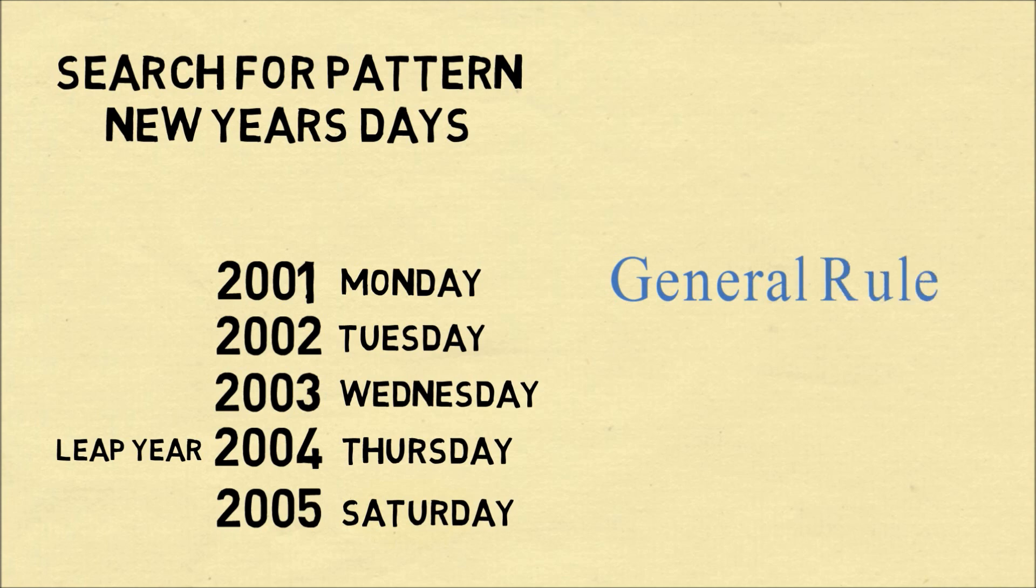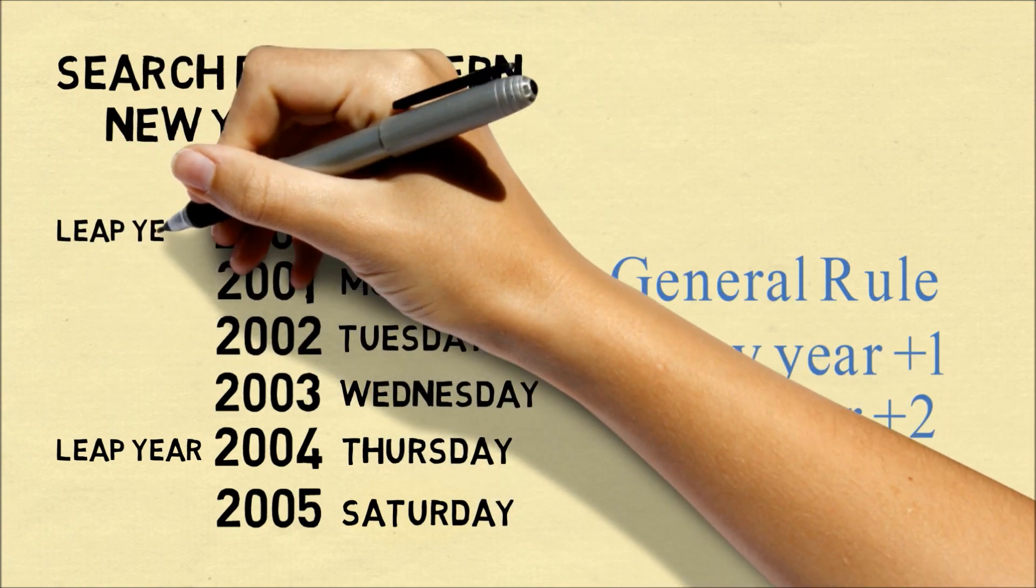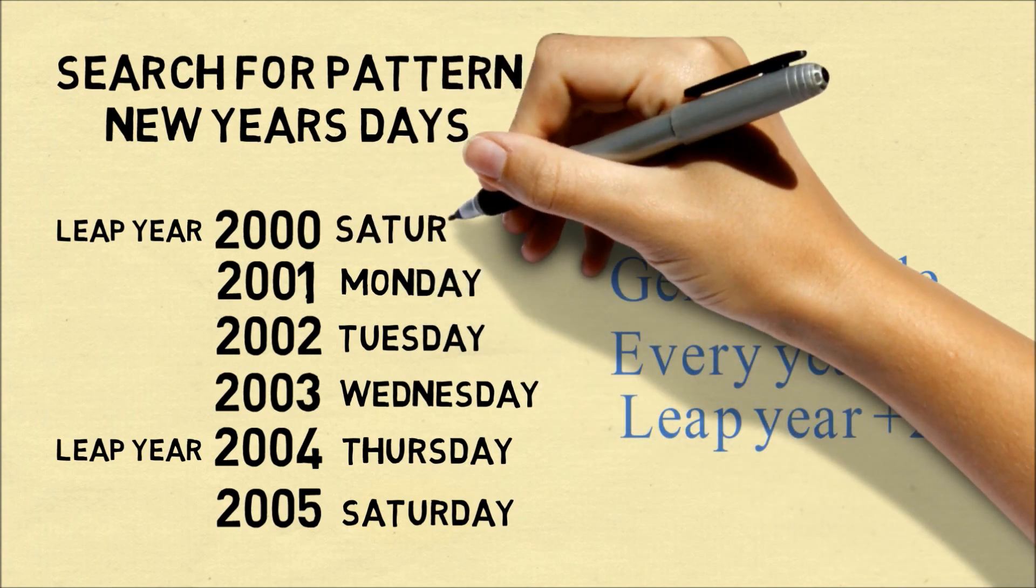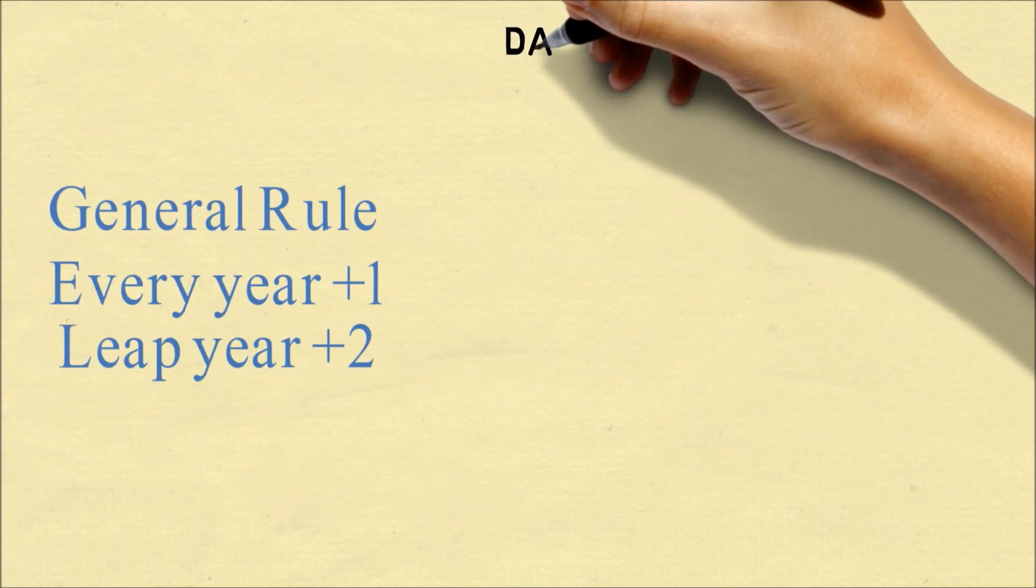So we have a general rule that every year pushes the New Year to start one day ahead, except a leap year, it will start two days ahead. In the year 2000, which was also a leap year, it would have started two days before Monday, which is a Saturday. And we can see the pattern will continue as we continue the years.